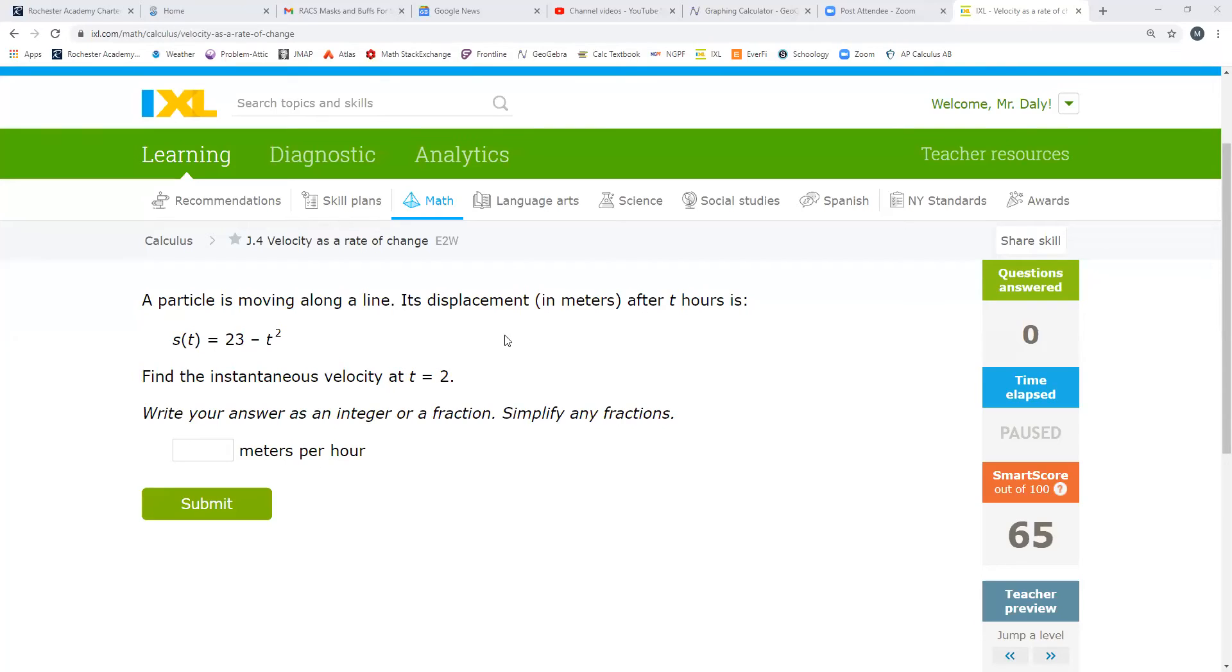At any rate, let's take a look at the kind of problem that you will see from the number one application that derivatives have in physics. All right, so off to IXL. So this is IXL J4, which I'm not going to assign to you. You're free to do it if you want to. But when we talk about particles moving in a line and its displacement, so displacement means how far it's moved from its starting point after t hours is 23 minus t squared.